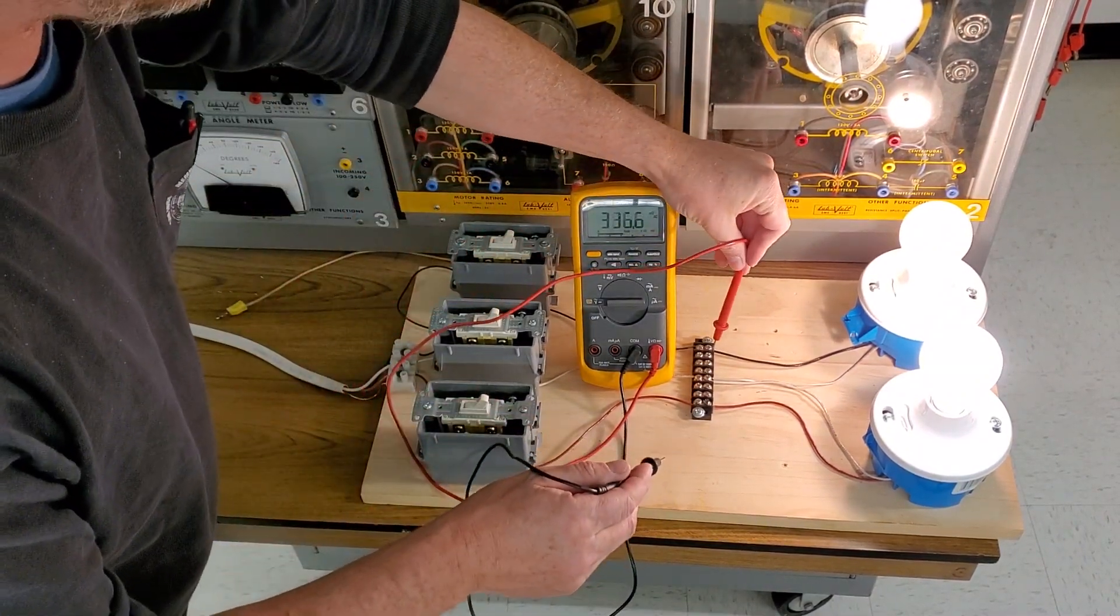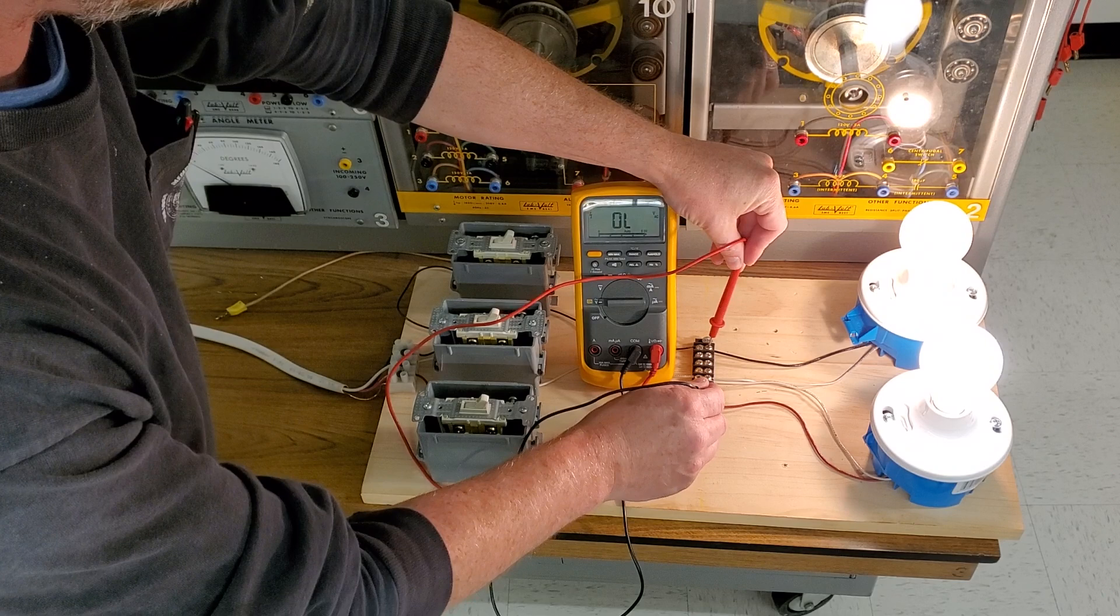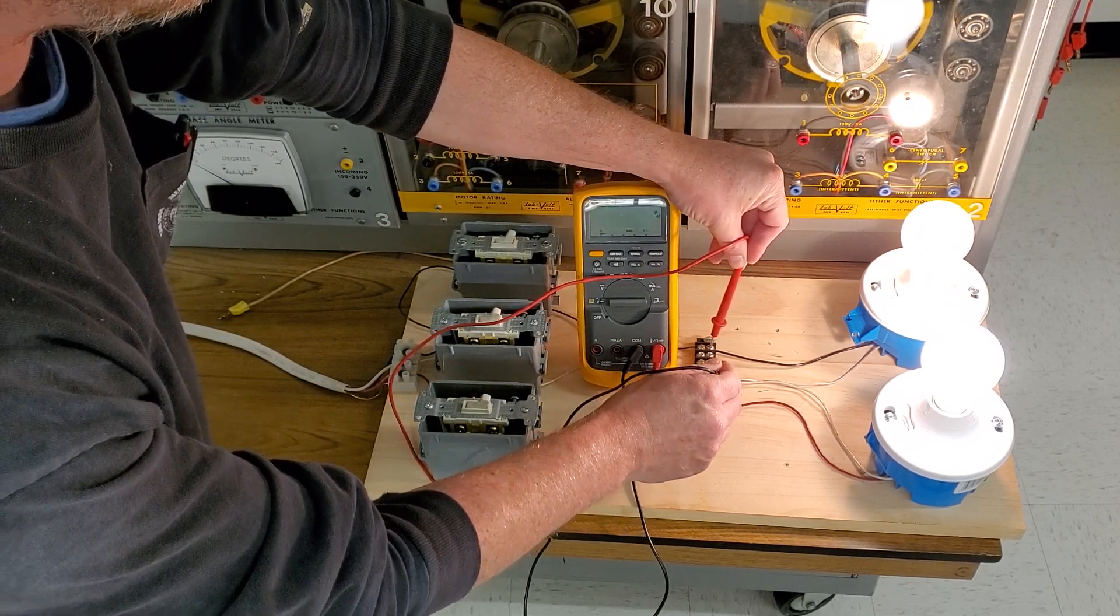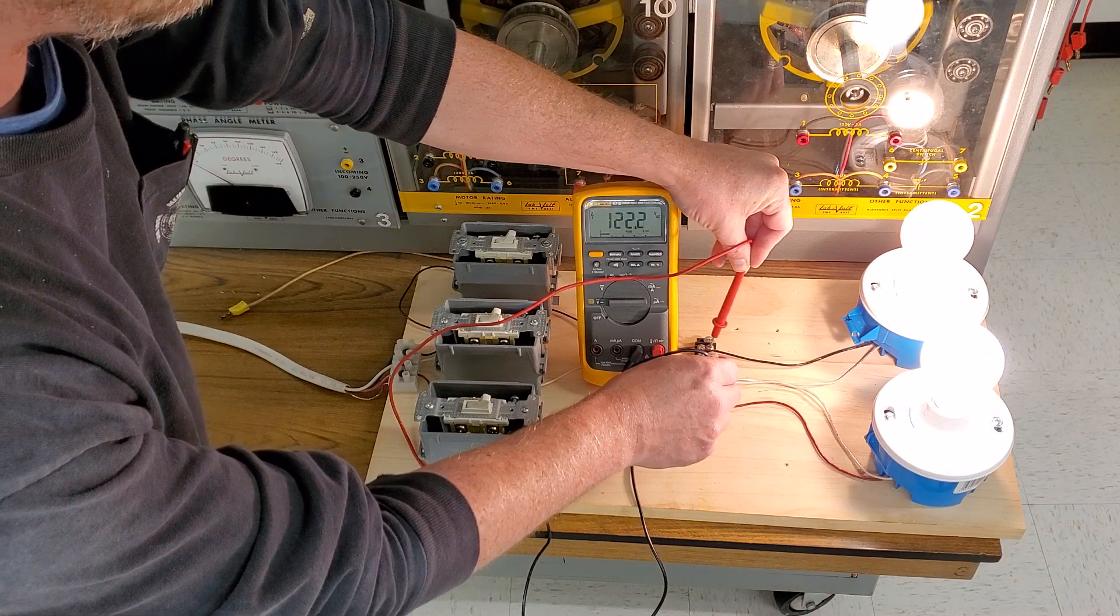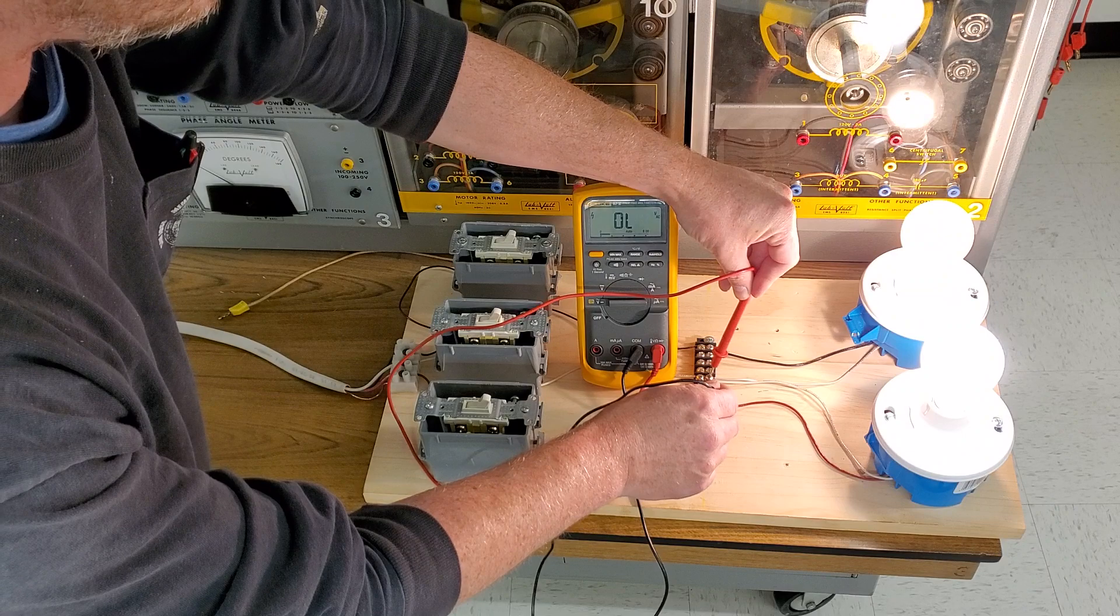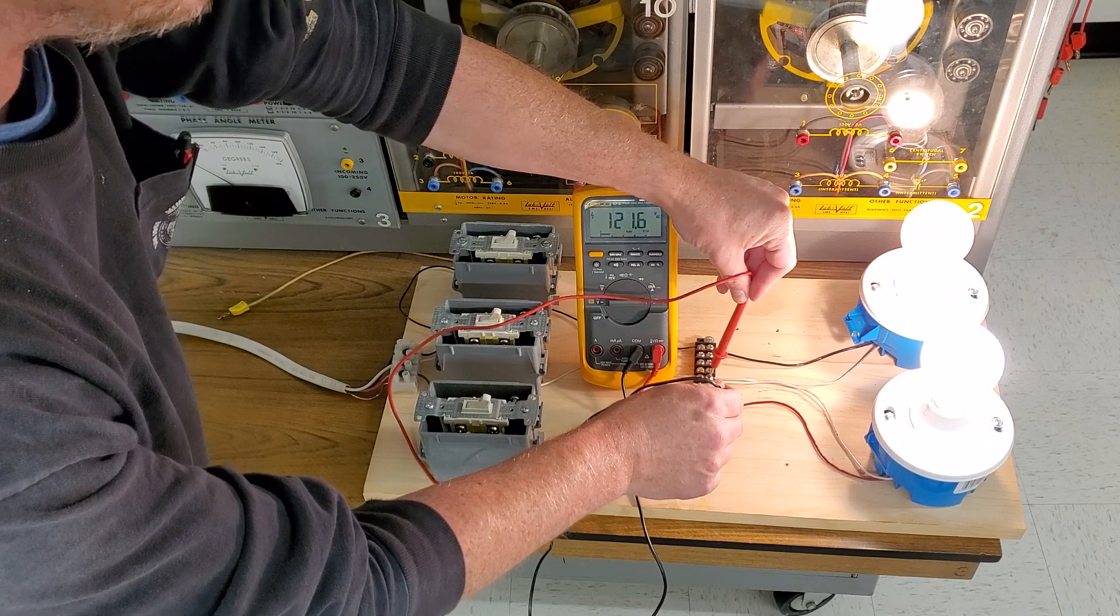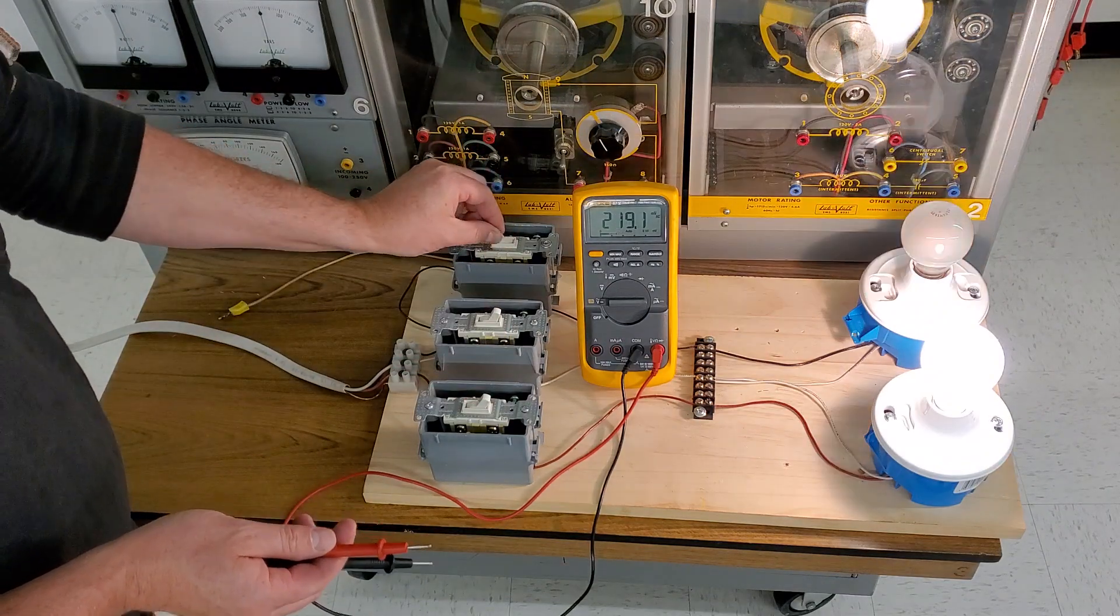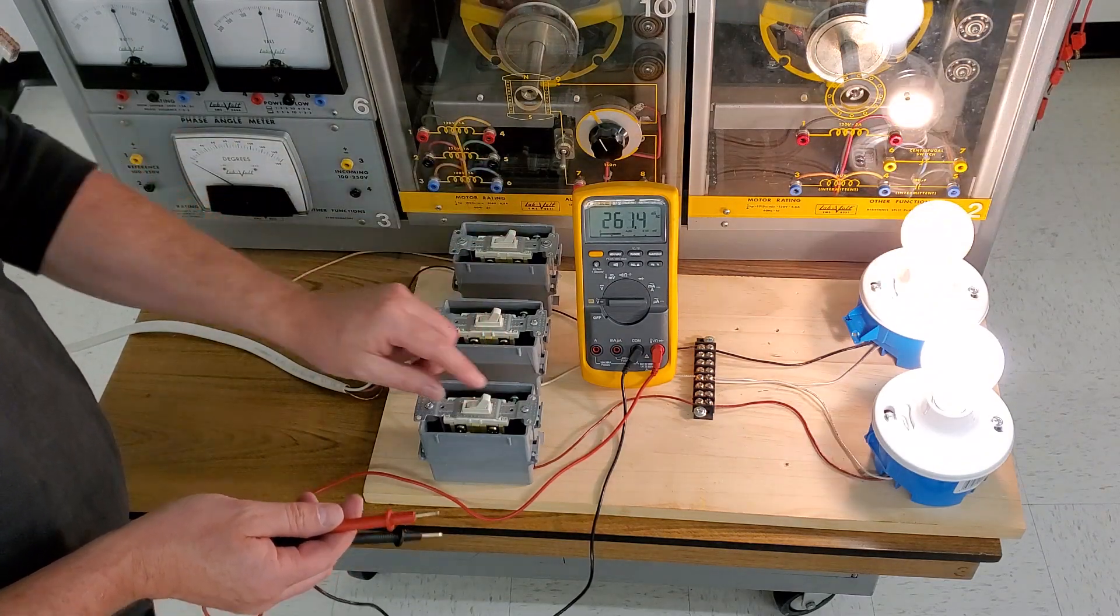Phase to phase we have 210.8 volts, phase to neutral we have 122 and phase to neutral we have 121. So essentially this is just a regular circuit with two light bulbs. I can turn them on and off individually with these two switches.